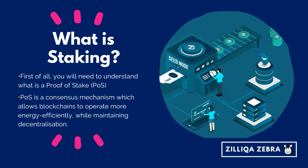What is staking? To get a better grasp of what staking is, you will first need to understand how Proof-of-Stake or POS works. POS is a consensus mechanism that allows blockchains to operate more energy efficiently while maintaining a decent degree of decentralization, at least in theory. Let's dive into what POS is and how staking works.